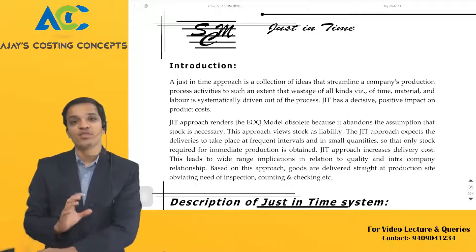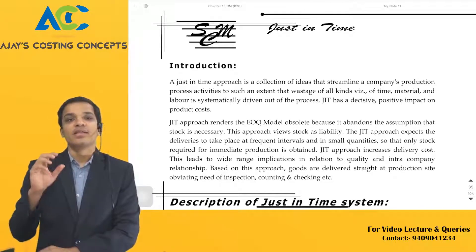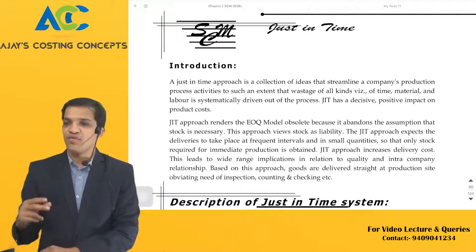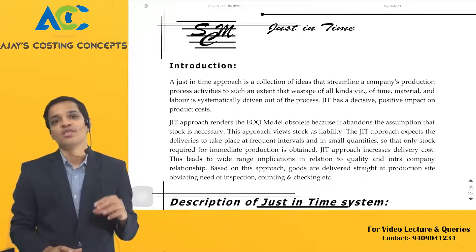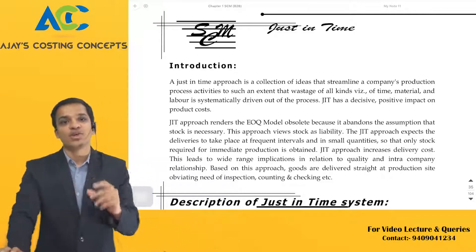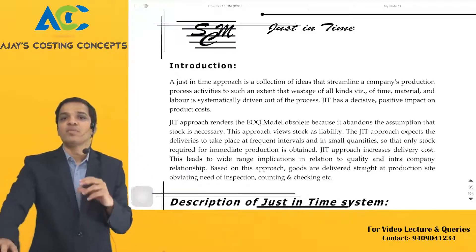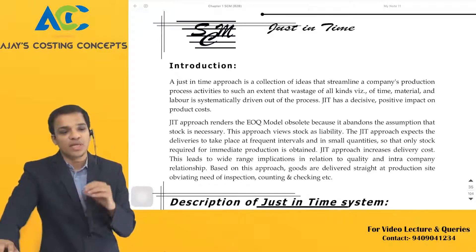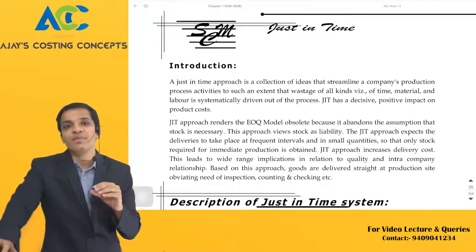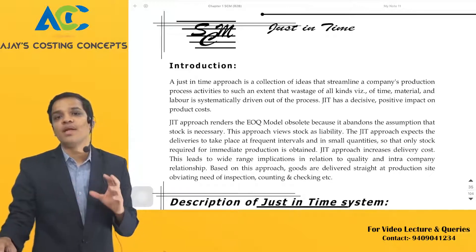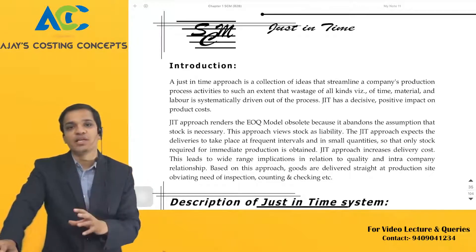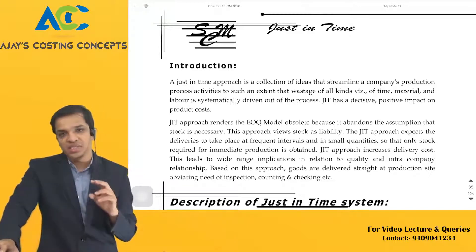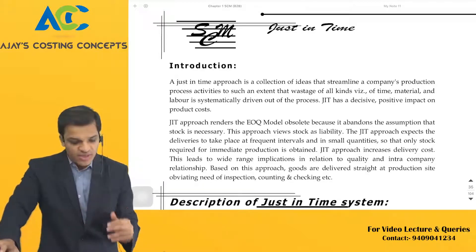This is how just-in-time works. The CA Final paper is Strategic Cost Management and Performance Evaluation, and this topic falls under strategic cost management — how a company can manage costs and ensure profits are higher. Based on this understanding, just-in-time was introduced. Here you are not maintaining godowns or storage, and no carrying cost is incurred. There are two systems in just-in-time: kanban card system and working cell system, which we will discuss later.